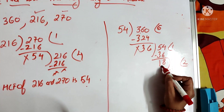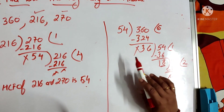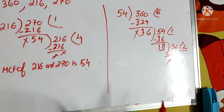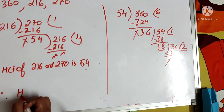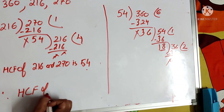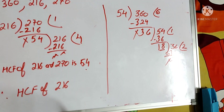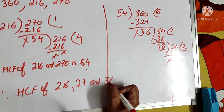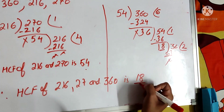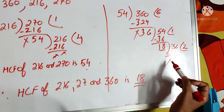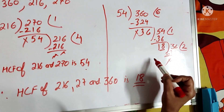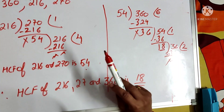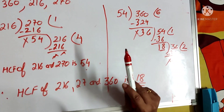Therefore, HCF of 54 and 360 comes out to be 18. We conclude that HCF of 216, 270, and 360 is 18. The last divisor which we obtained becomes the HCF. In this way, we solve when we have to find HCF of more than 2 numbers.